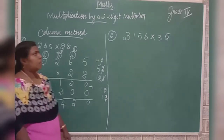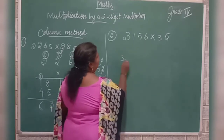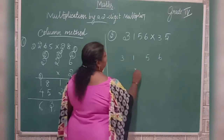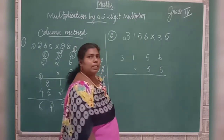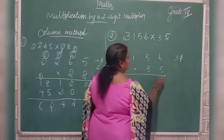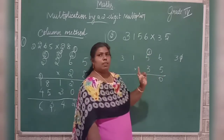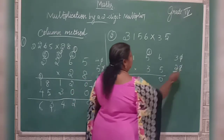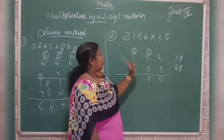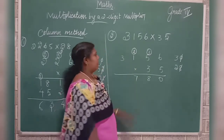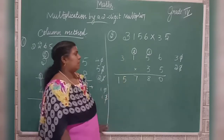One more example: 3,156 into 35. First use the 5th table. 5 times 6 is 30 — write 0, carry 3. 5 times 5 is 25, plus 3 is 28 — write 8, carry 2. 5 times 1 is 5, plus 2 is 7. 5 times 3 is 15 — write 15. First product is over.